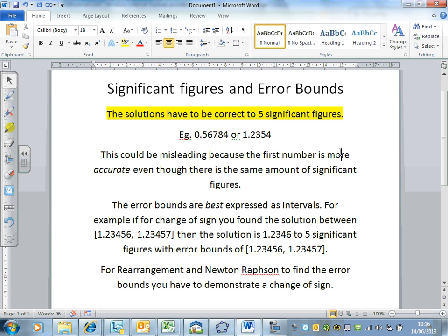What that means is if we have an answer between 0 and 1, or minus 1 and 0, five significant figures would be 0.56784. This is also five significant figures: 1.2354. The one suddenly becomes significant.